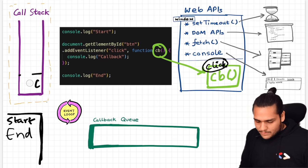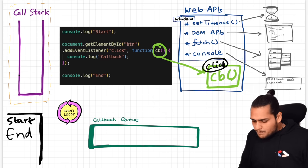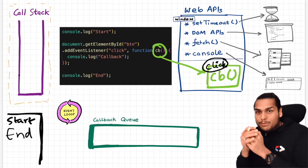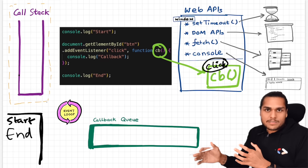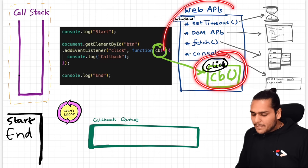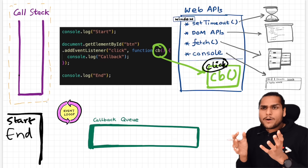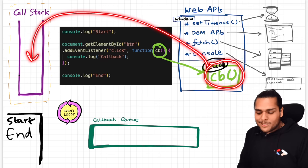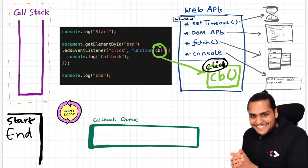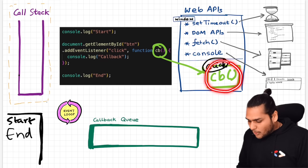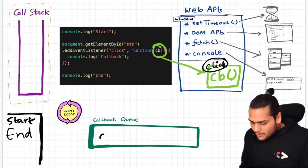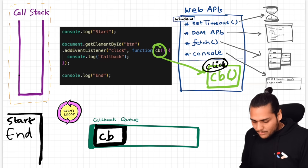This event handler will stay in the web APIs environment until and unless we explicitly remove that event listener or we close the browser. This registered callback method inside the web APIs environment just sits there in the hope that some user will someday click on the button. When the user clicks on the button, this callback method is then pushed inside the callback queue, where it waits for its turn to be executed.